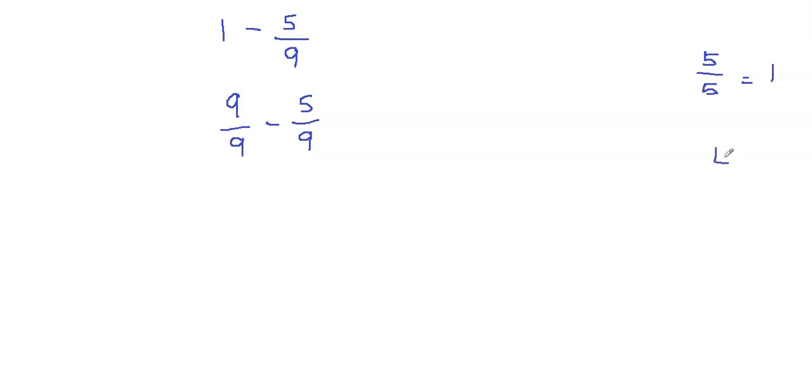Because let's say if I have 4 over 4, and if I need to subtract 5 ninths, then how can I do that? Because I don't have a common denominator. Then I'll have to find the common denominator in order to subtract these fractions, and this will make the problem more tricky. So that's why I have written 1 as 9 over 9.